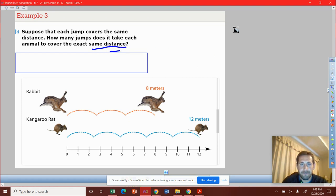So again, this rabbit jumped eight meters in three jumps. So we're doing meters or distance with every jump. And then it doesn't equal. We have this kangaroo rat that's 12 meters in five jumps.